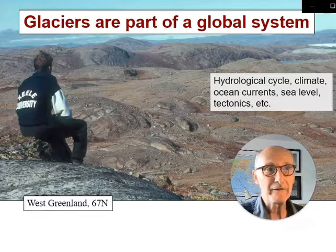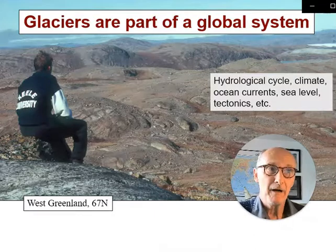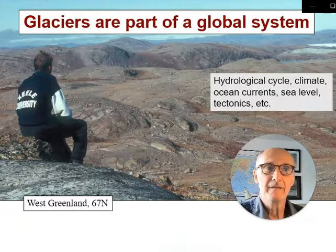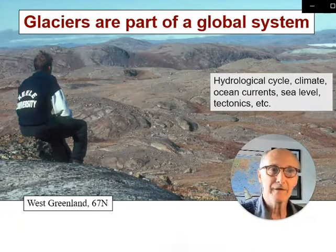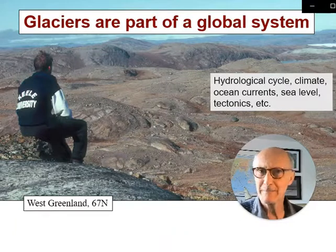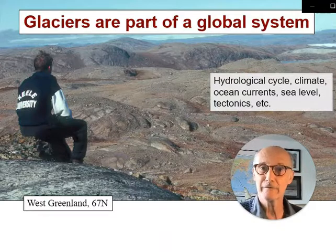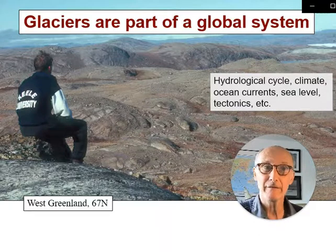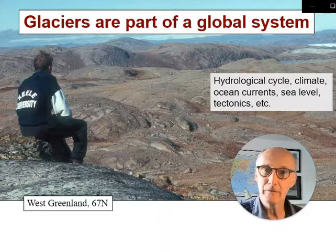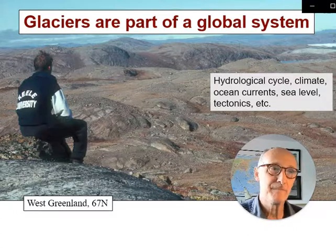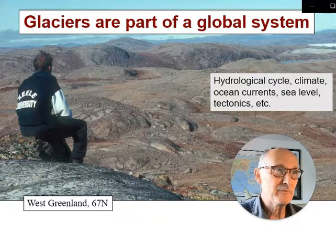The basic point is that glaciers are part of a big global system. The hydrological cycle, climate, ocean currents, sea level change, plate tectonics, isostasy and eustasy — things at that kind of scale, physical geography on the mega scale, the planetary scale — are all connected to the role of glaciers and ice sheets.